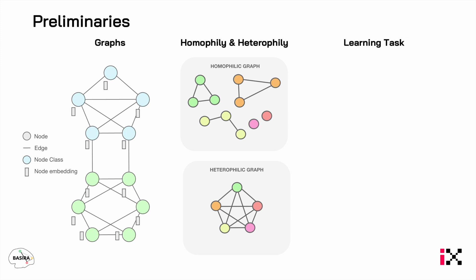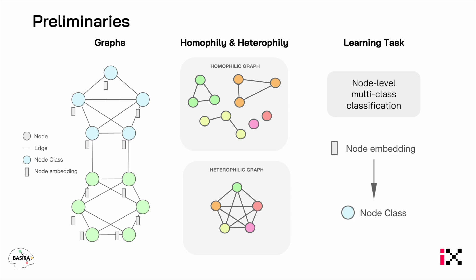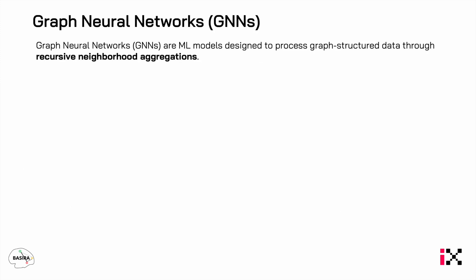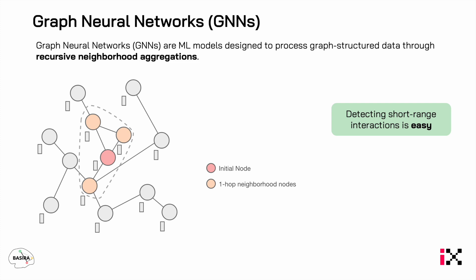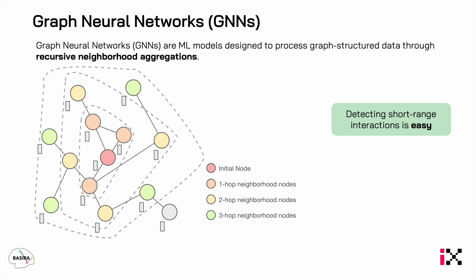Throughout this work we consider the learning task of node classification, and our model will have to manipulate the embeddings to predict the classes. Graph neural networks, or GNNs, are machine learning models which make use of recursive neighborhood aggregations to process graphs. As you can see here, the embedding of the initial node is updated using the embeddings of its neighbors, also called first-hop neighbors, in the first aggregation. As we do this iteratively, we consider always more distant nodes.